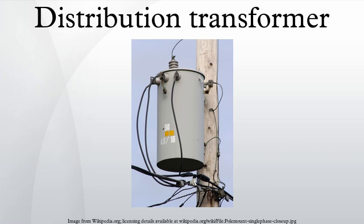Distribution transformers are classified into different categories based on certain factors such as mounting location — pole, pad, or underground vault; type of insulation — liquid immersed or dry type; number of phases — single phase or three phase; voltage class; and basic impulse insulation level.